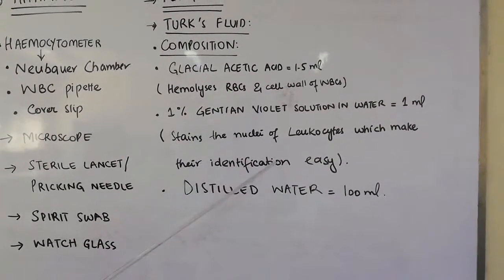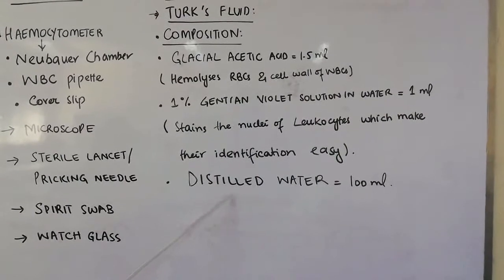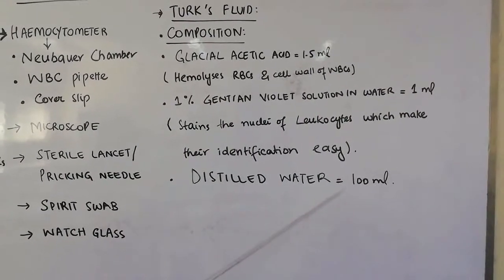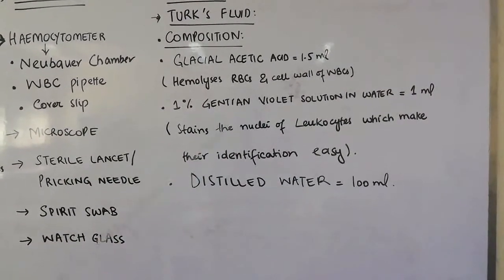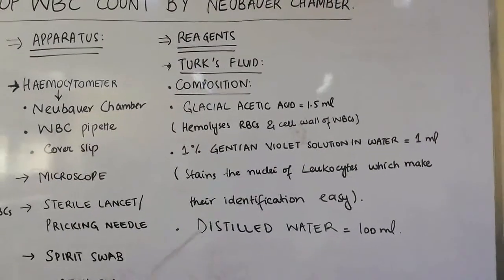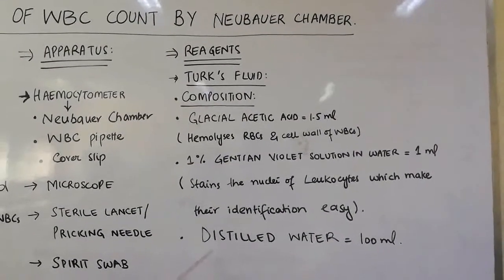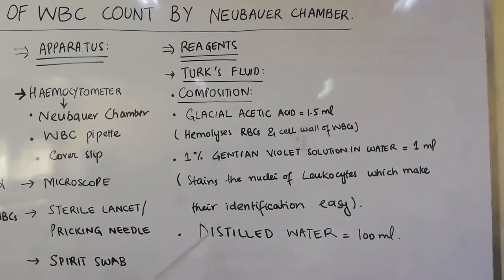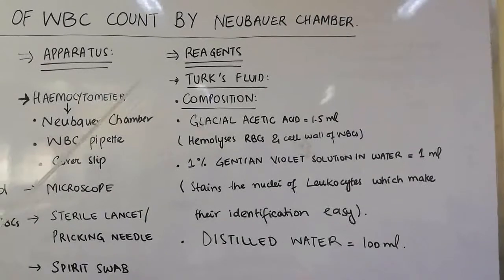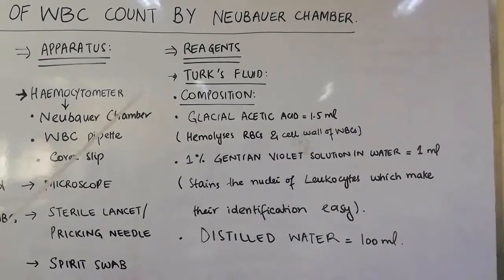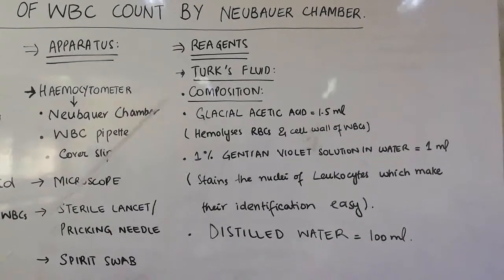The last component is distilled water, which is 100 ml in the Turk's fluid. The Turk's fluid is already made — you don't have to make it by mixing these ingredients — but you have to remember the composition of Turk's fluid used in the determination of WBC count by the Neubauer chamber.